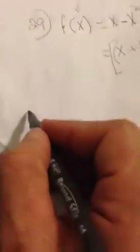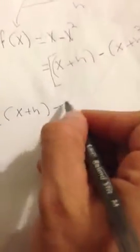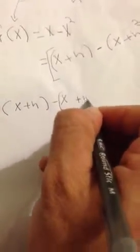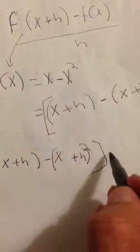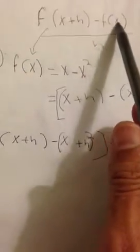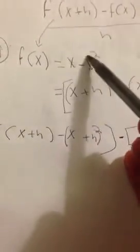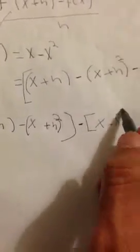Let me move it down here since I have no more space. So we have: (x+h) minus (x+h) squared, and then minus the second function. We open brackets and put f(x), which is x minus x squared, and close it.